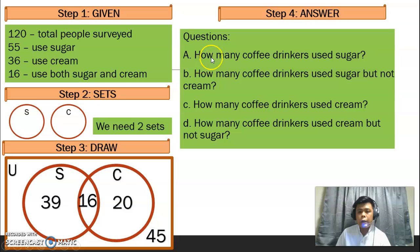Then, sagutan na natin to, how many coffee drinkers use sugar? 55. Ito yan, add niya siya. 39 plus 16. How many coffee drinkers use sugar but not cream? 39. Sugar but not cream. Ito lang yung 39. How many coffee drinkers use cream? You have 36. Ito yan, add niyo yun. And how many coffee drinkers use cream but not sugar? Meron tayong 20. Good one. Thank you. Bye.